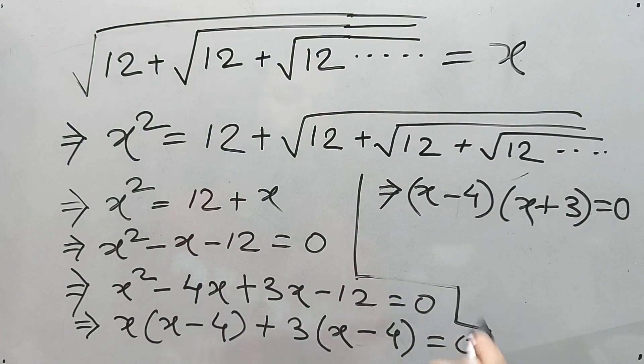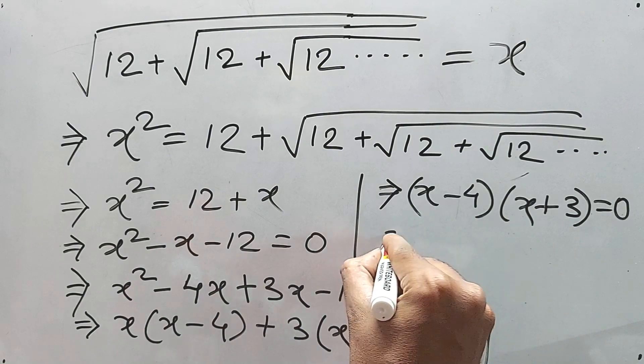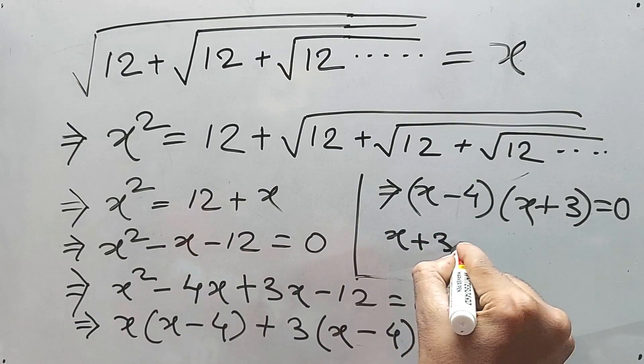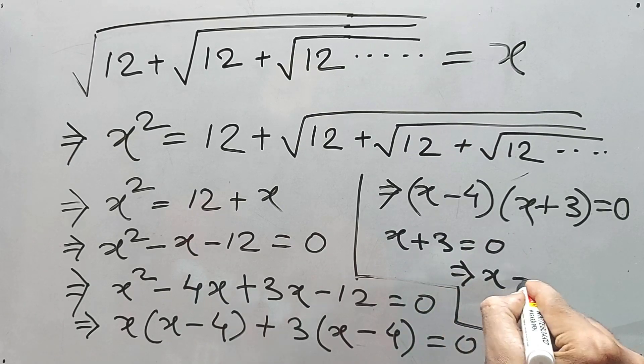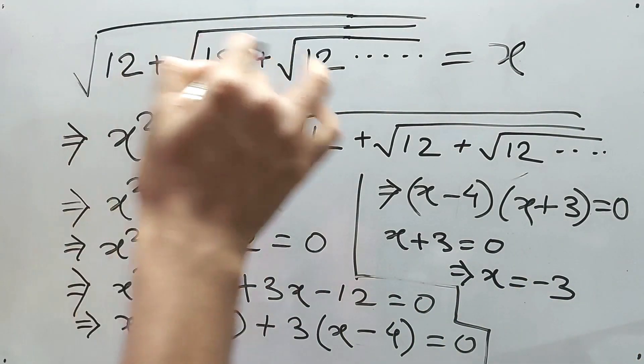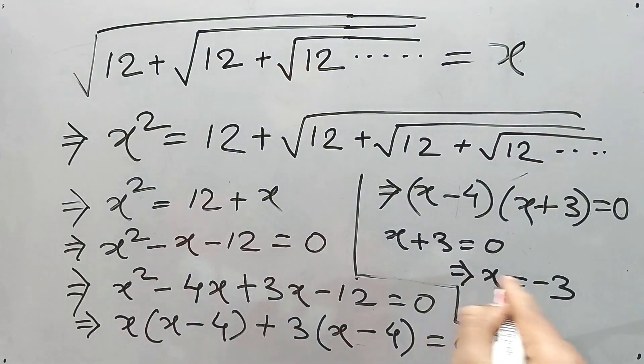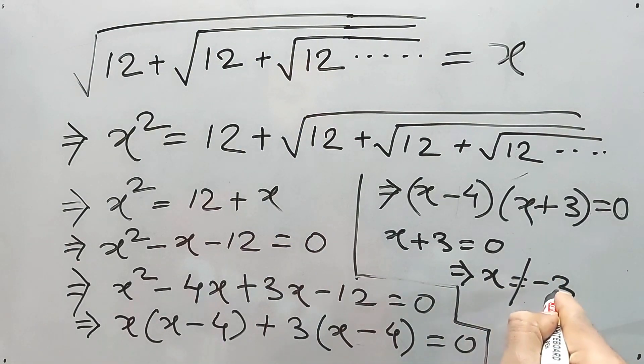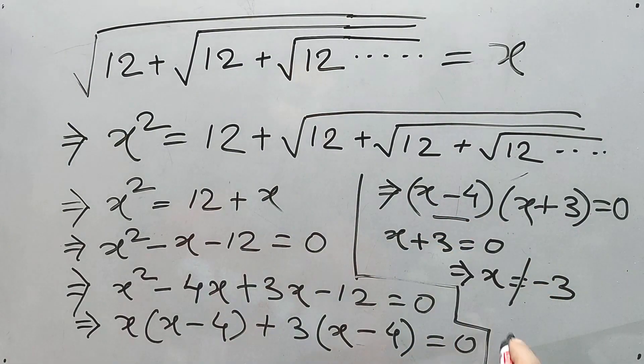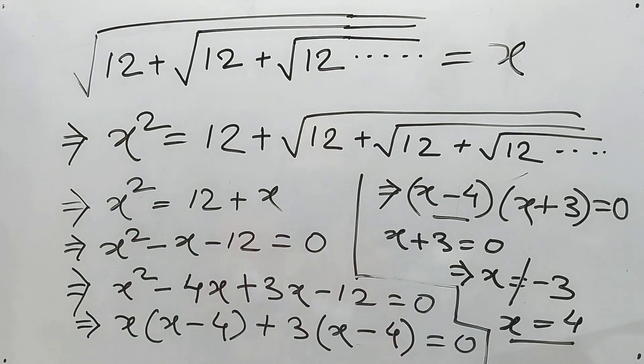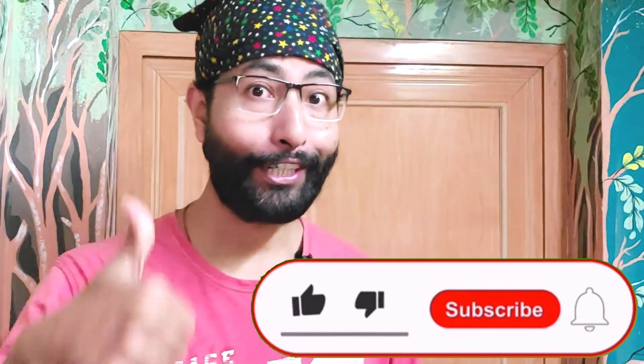Now, clear thing: if we take x plus 3 equals 0, therefore x equals minus 3. But there will be some value, right? Minus will not come. So this one is not equal to minus 3. Therefore, the first one we'll have to take, that is x equals 4. This is your answer, clear and definite.